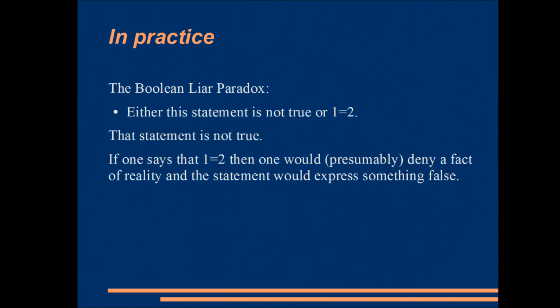Let's look at the Boolean Liar Paradox, one that is quite interesting. It is stated: either this statement is not true, or 1 equals 2. While we could just say that the statement is not true by the same reasoning as before, it could be interesting to explore some of the other aspects of that statement. Let us focus on the last part: 1 equals 2. If one were to say that, one would — making some assumptions about mathematics — deny a fact of reality. It would therefore be a falsehood that 1 equals 2, but 1 equals 2 itself wouldn't be a falsehood.